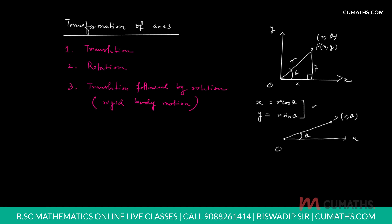We have these three types of axis transformation. First one is translation, number two is rotation, and the third one is translation followed by rotation. Now we discuss each briefly.